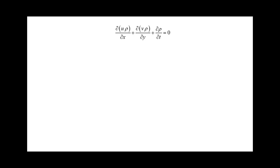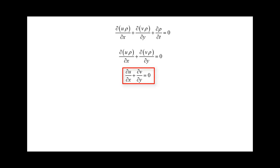If we restrict ourselves to incompressible fluids, then density is constant. Even if the problem is transient, density can't be changing, so the time derivative of density is zero. Since density is constant, it can be pulled out of both spatial derivatives and we can divide through by density. We end up with the simplified continuity equation for incompressible flow: even for transient problems, there is no time derivative term.